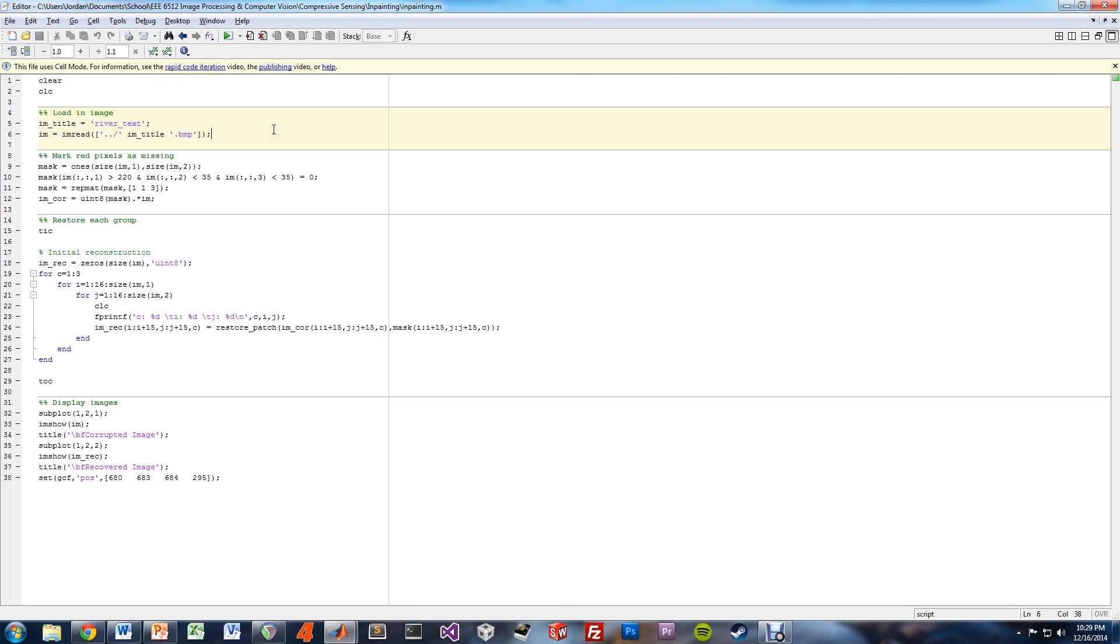Once the obstructed portions are marked, we go through the same compressive sensing techniques to recover each 16 by 16 pixel patch. And then we stitch, like before, all the patches together and display the final image as output.